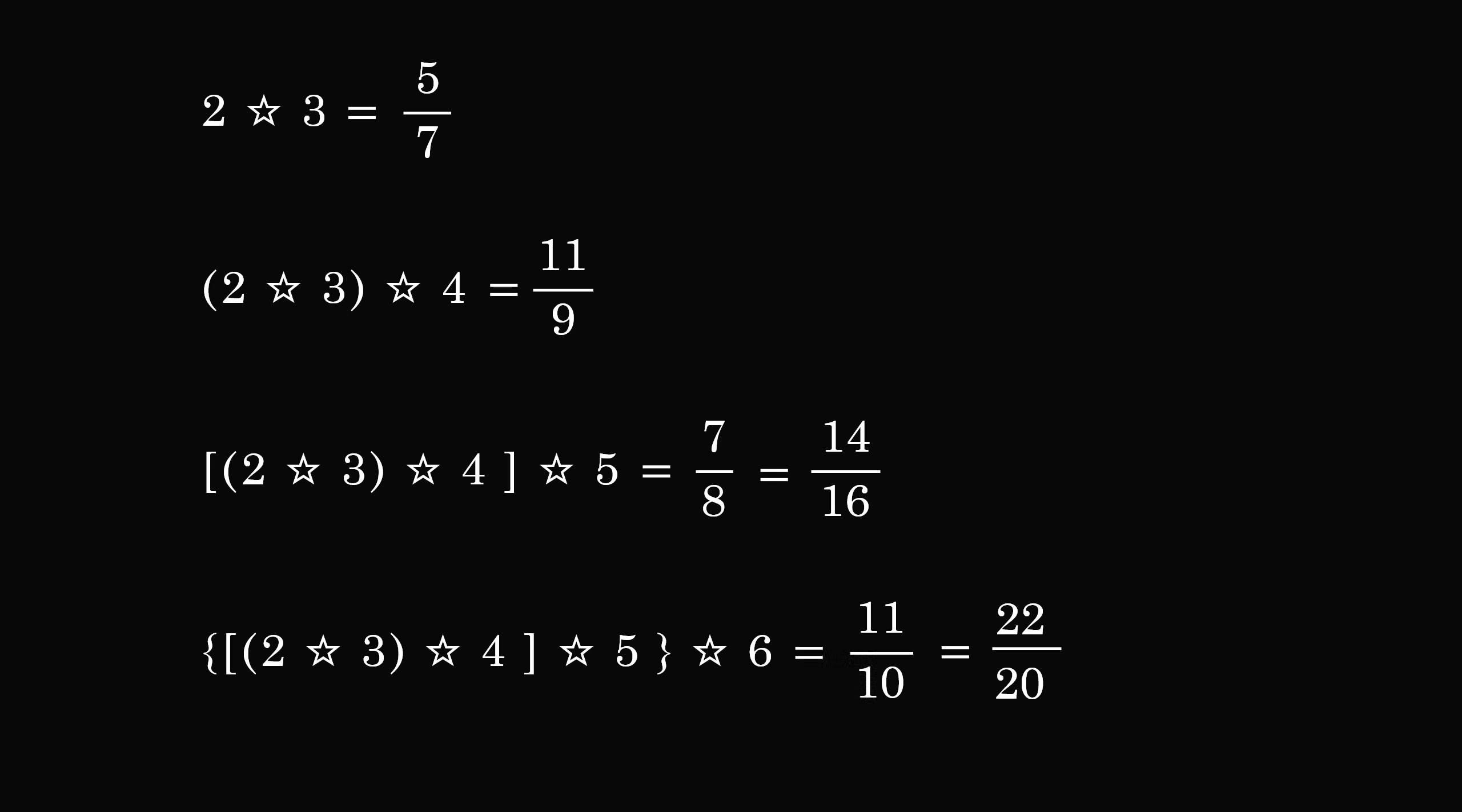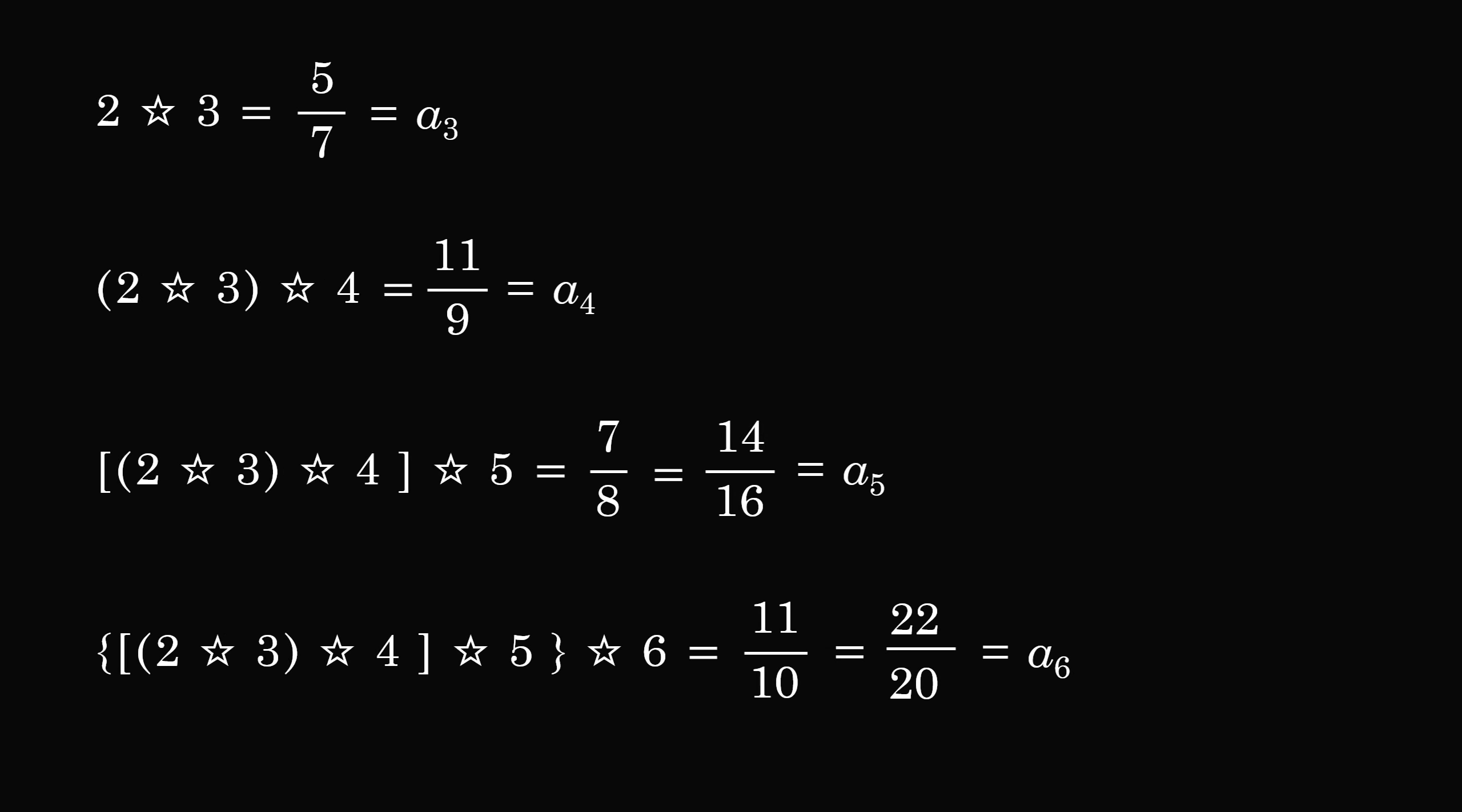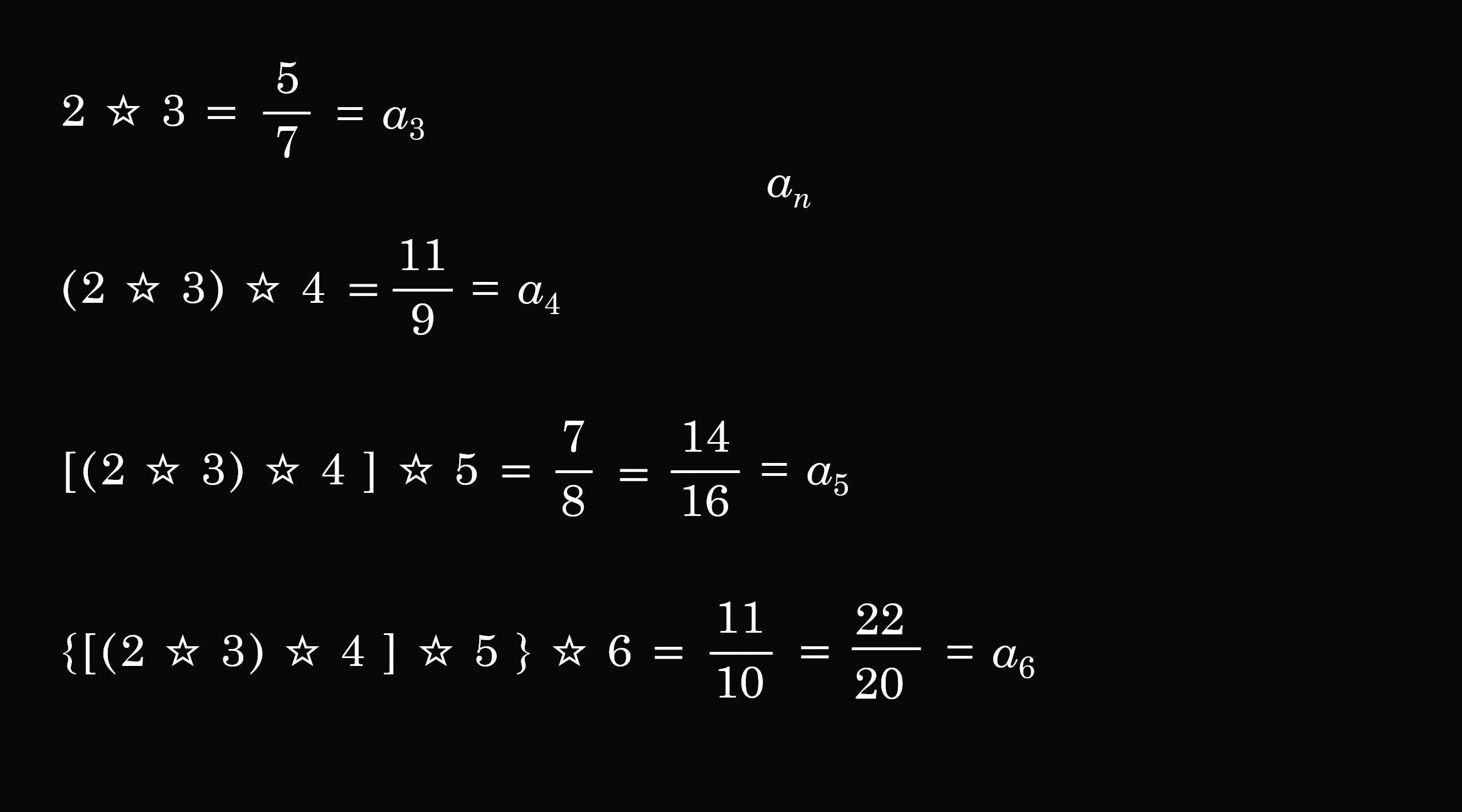Let's say the first result is a3, the next result is a4, then we have a5 and a6. So after studying these fractions we can come up with the following pattern. We will hypothesize that an is equal to n multiplied by n plus 1 divided by 2 minus 1 all over n multiplied by n plus 1 over 2 plus 1. So this is the sum of numbers to n minus 1 in the numerator and the sum of the numbers to n plus 1 for the denominator.